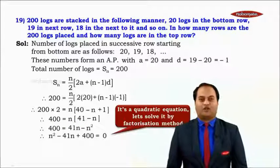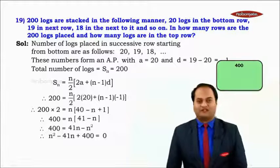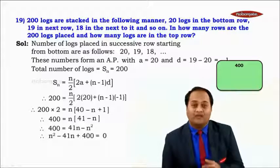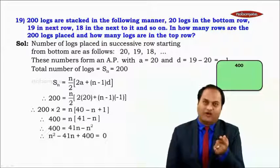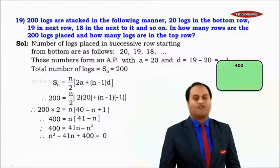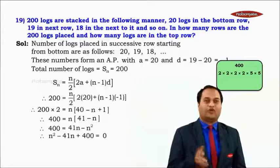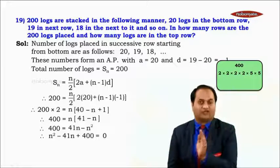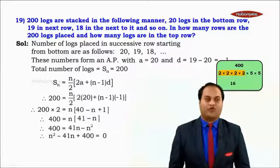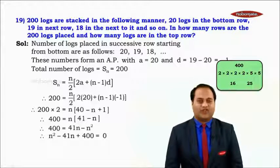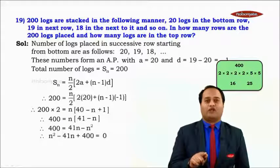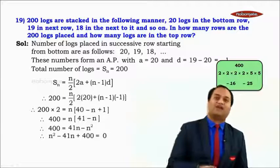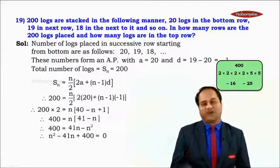Let's solve this quadratic by factorization. We need factors of 400 which on adding give −41. Factorizing 400: 2×2×2×5×5. Grouping: 16 and 25. Since 25 + 16 = 41, we want −25 and −16 because −25 + (−16) = −41.